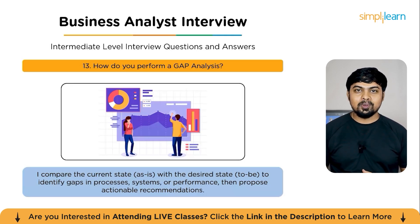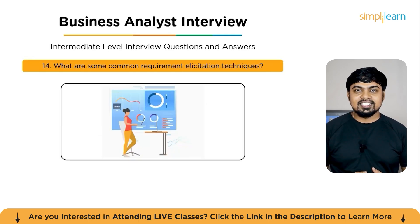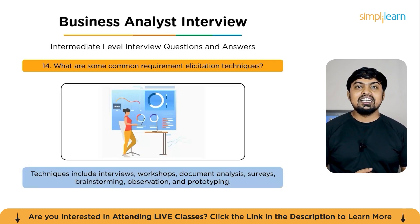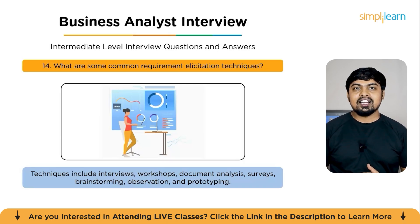Question 14: What are some common requirement elicitation techniques? Effective elicitation ensures a complete understanding of stakeholder needs. Common methods include: interviews and surveys for individual feedback; workshops to gather diverse perspectives; observation — watching end users perform tasks; prototyping — demonstrating mock-ups for clear feedback; and document analysis — reviewing existing manuals or reports. Choosing the right method depends on stakeholder availability, project complexity, and data sensitivity.